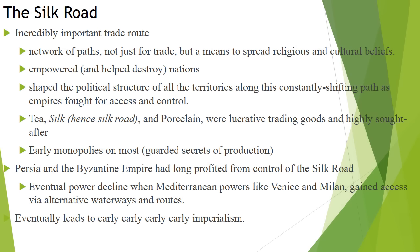Tea, silk, and porcelain are very lucrative and sought after by the Romans and others in the intermediary region. That's a big reason why this network of roads is put together. And then finally, monopolies — you have to look at the importance of monopolies here. We'll start seeing monopolies later on when it comes to trade guilds and unions in the western world, like Europe after the fall of the Roman Empire.